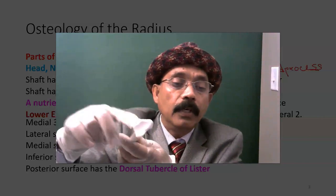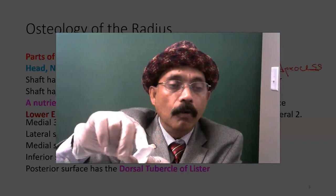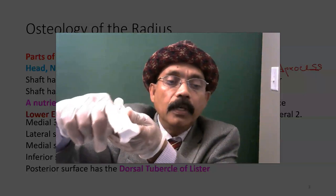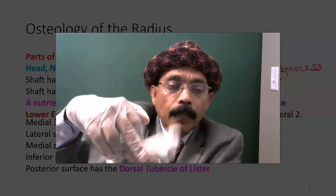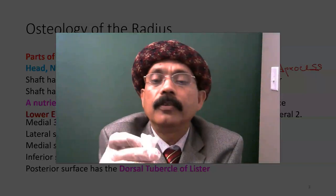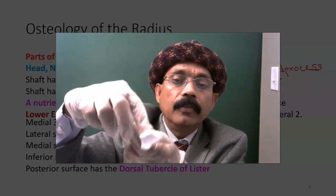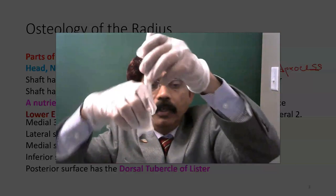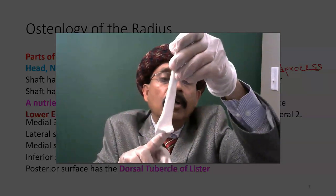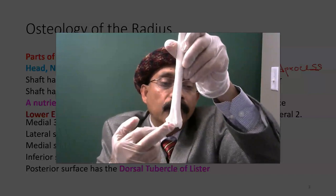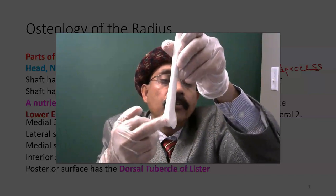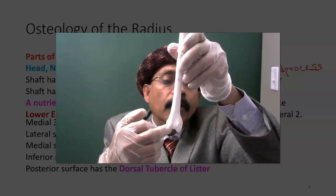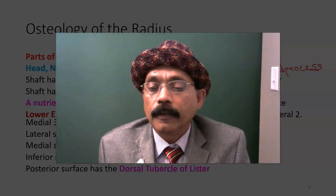Just medial to the dorsal tubercle of Lister there is a depression — a groove for the passage of the extensor pollicis longus tendon. The groove is on the medial side of the dorsal tubercle.